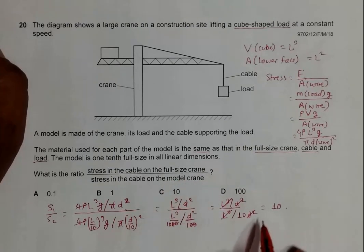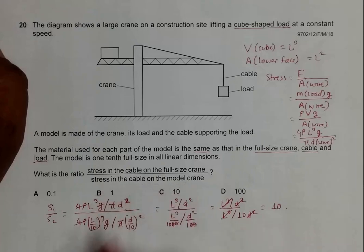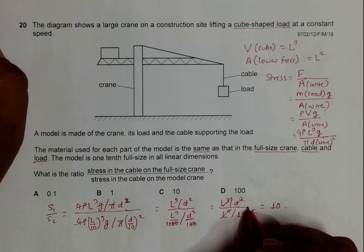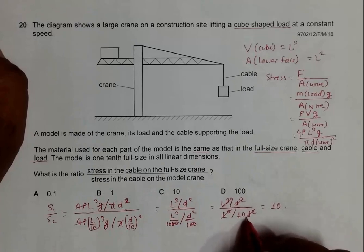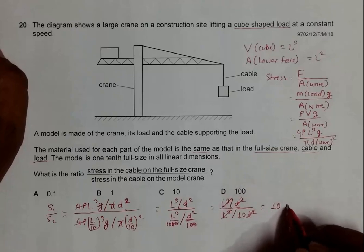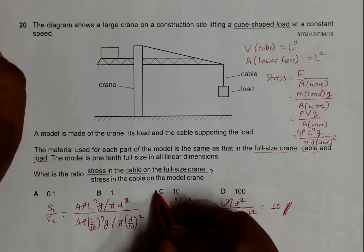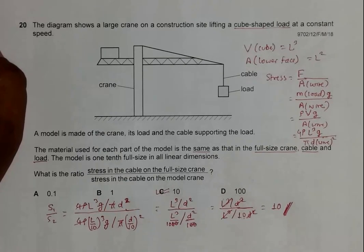One thing to remember here: this 10 is in the fourth stage of the fraction, so it comes to the first stage according to rules of mathematics. The ratio should be 10, which is choice C. Choice C is the correct answer.